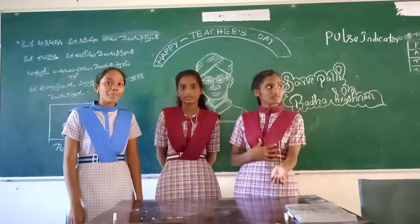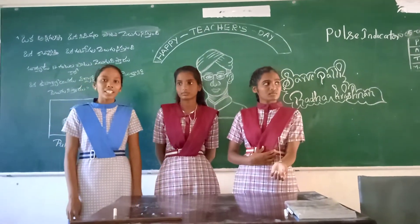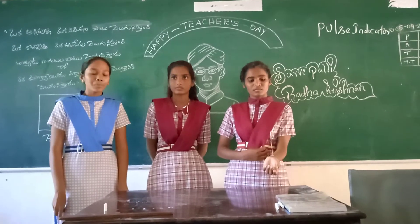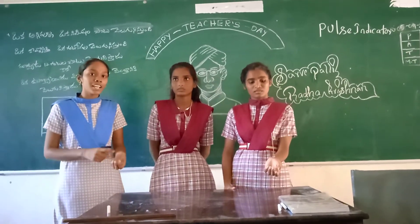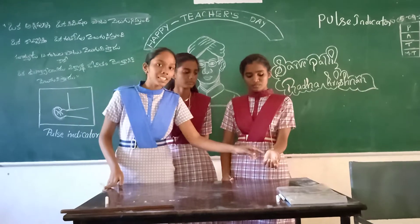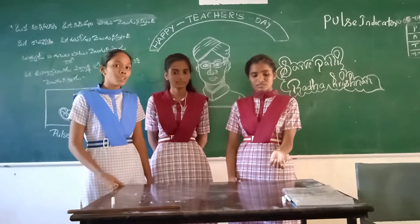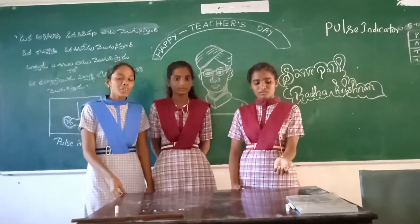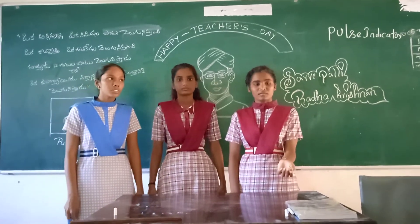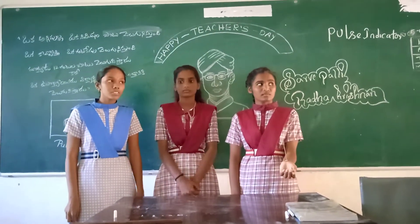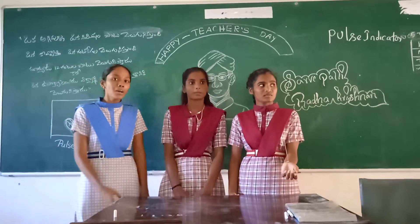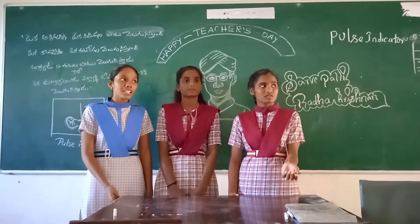Now I am telling you how to prepare a pulse indicator. Take a sewing button and put a matchstick through the holes of the button. This is the process of making a pulse indicator, and it is useful to measure the pulse rate.